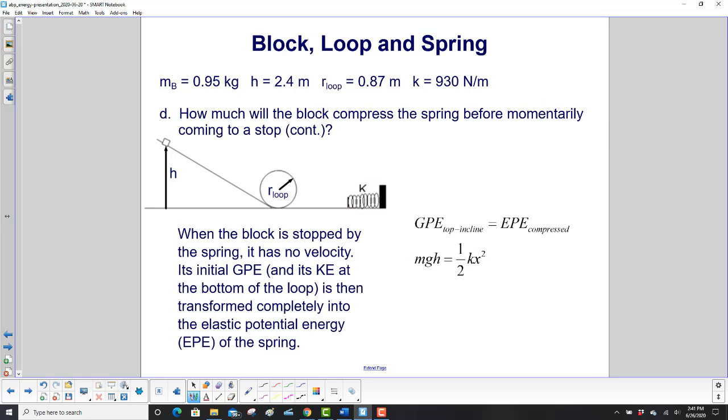So here's our conservation of energy. Here's the beginning energy, GPE at the top of the incline. And then what is our final energy? It tells us, right? The block is momentarily coming to a stop, so there is no kinetic energy left.